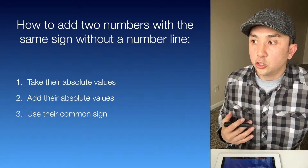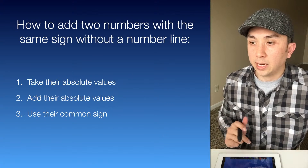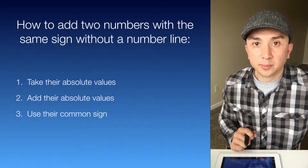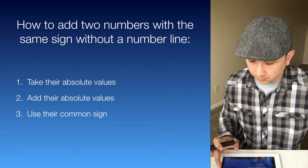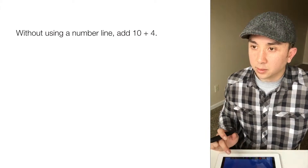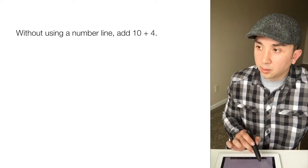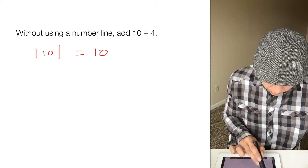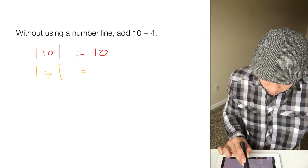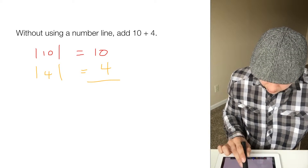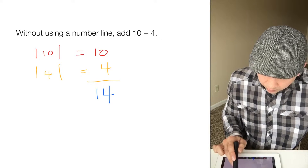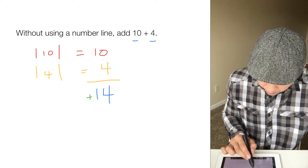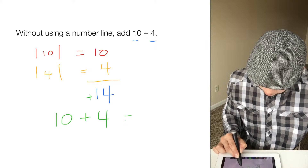Here's how we add two numbers with the same sign without a number line. First we take their absolute values, then we add their absolute values, and then we use their common sign. For example, add 10 plus 4. The absolute value of 10 is 10, the absolute value of 4 is 4. We add them: 10 plus 4 is 14. Because both are positive, the answer is positive 14. So 10 plus 4 equals 14.